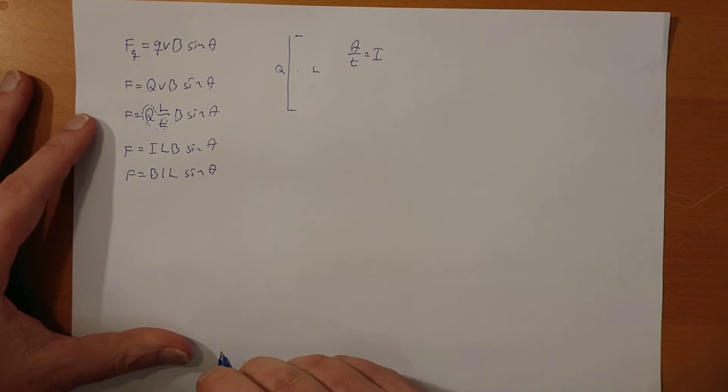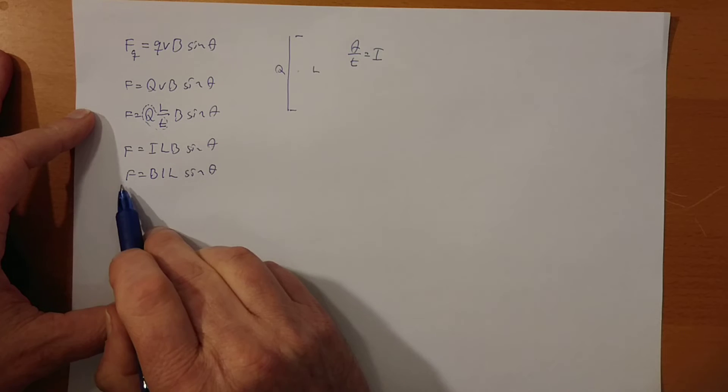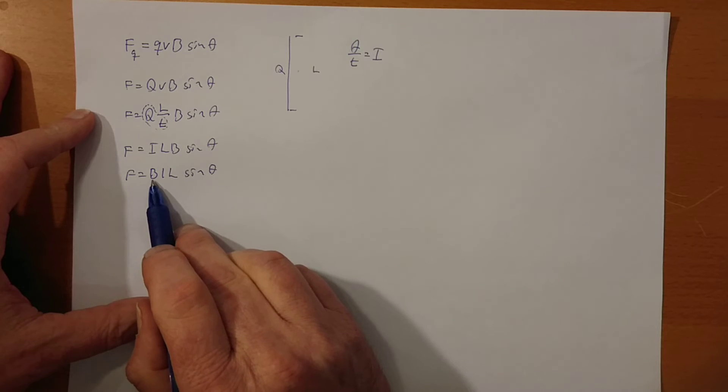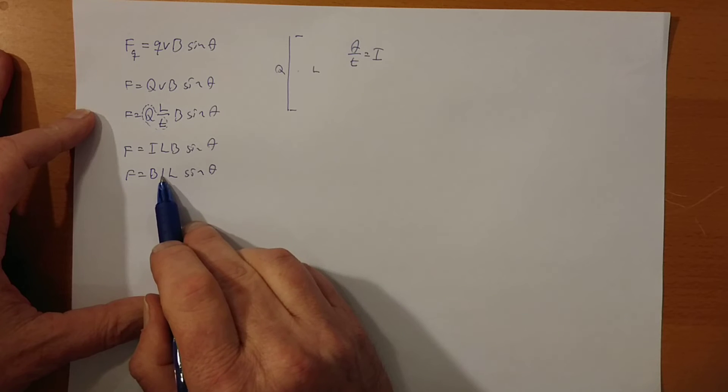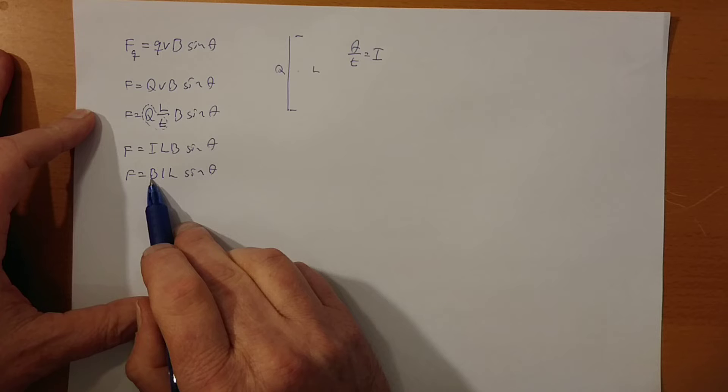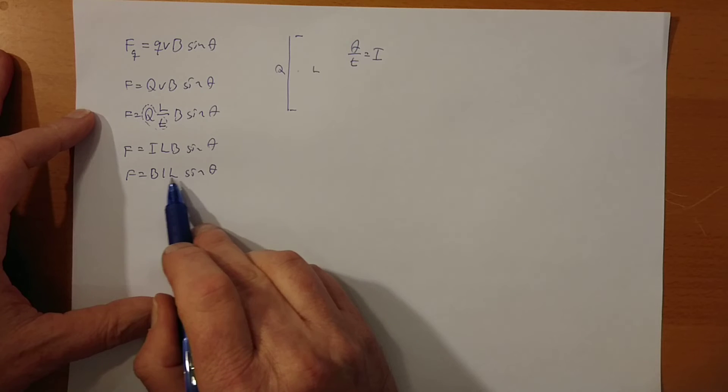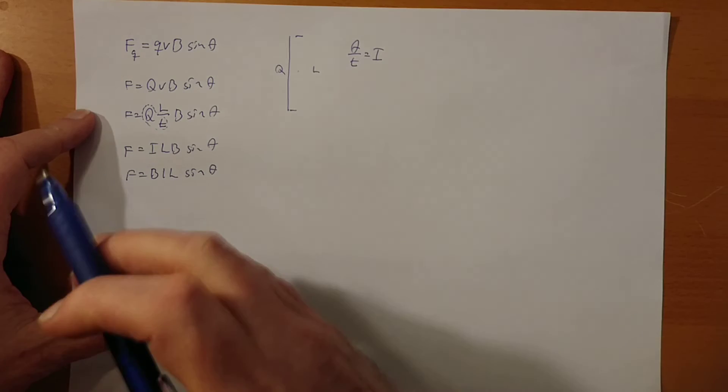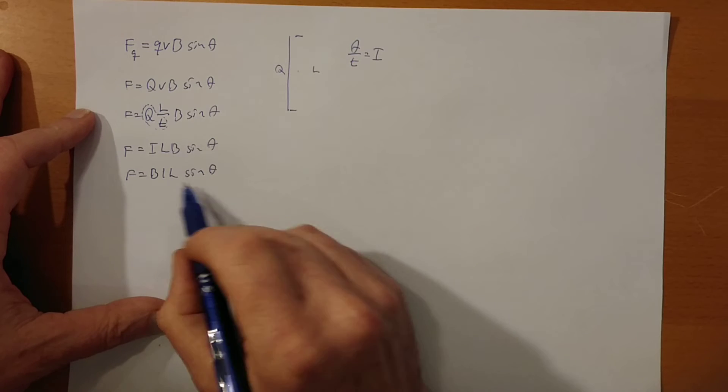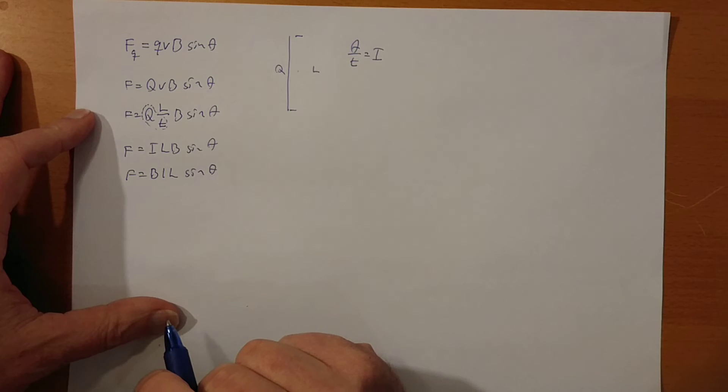So this will give us the force acting on a wire that is in a magnetic field times the current in the wire times the length of the wire in the field, or if you just take it per length unit, that would be fine, times sine of the angle.